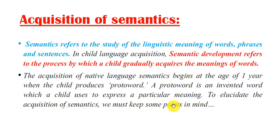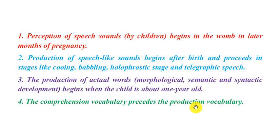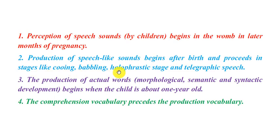To understand the acquisition of semantics, we must keep some points in mind. Perception of speech sounds by children begins in the womb, in the third trimester of pregnancy. Production of speech-like sounds begins after birth and proceeds in stages like cooing, babbling, holophrastic stage, and telegraphic speech. The production of actual words and morphological, semantic, and syntactic development begins when the child is about one year old. Comprehension of vocabulary precedes production vocabulary.